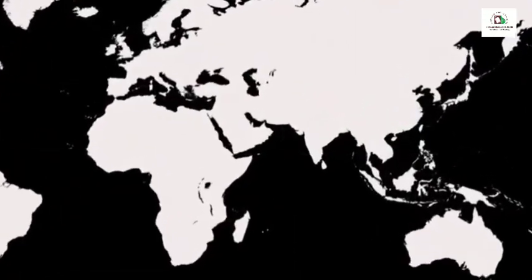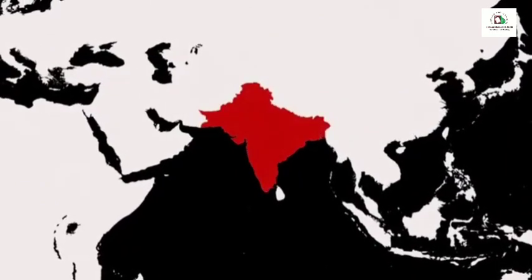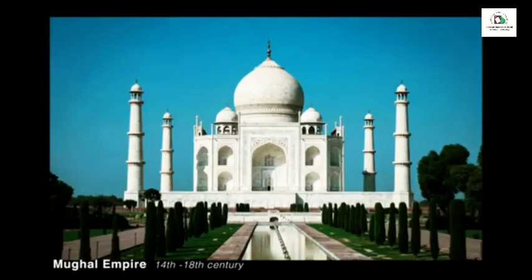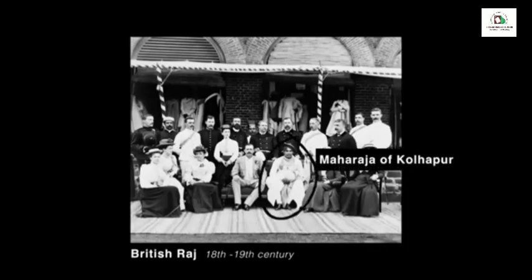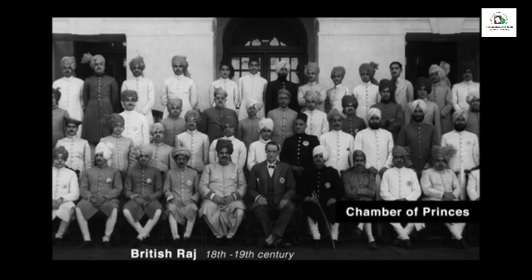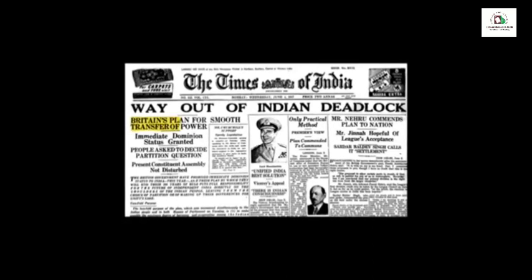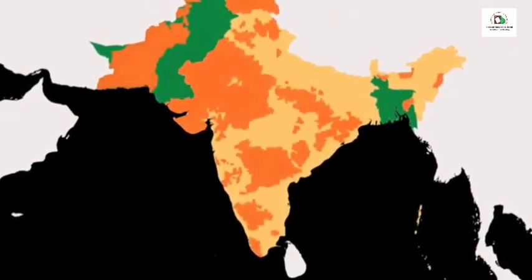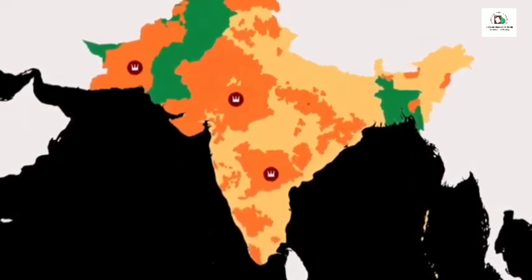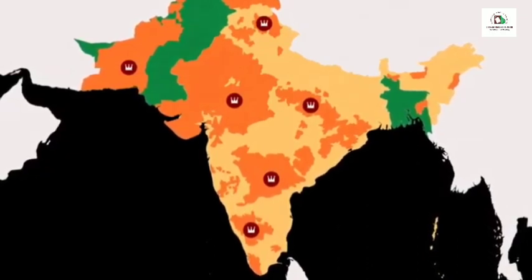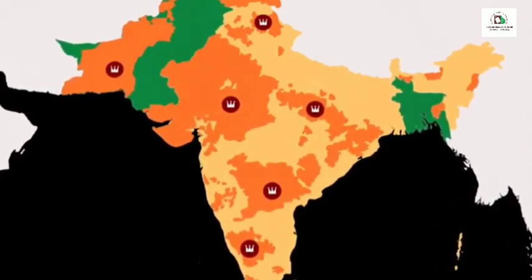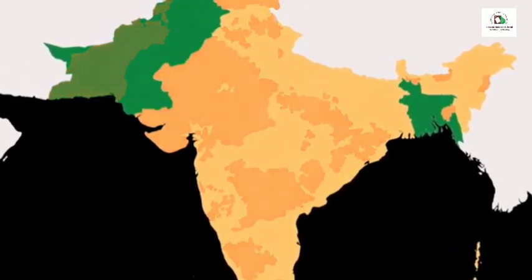For centuries monarchs ruled the Indian subcontinent. Vast empires emerged over time and a few rulers left lasting impressions of their legacy in the region. Even under British occupation, feudal rule by natives endured. But by the 20th century things began to change. In 1947 British India was about to become independent and split into two countries. Scattered between the two regions were 565 princely states, each with a native ruler who held immense wealth and power. Some rulers were determined to hold on to their power when the British left.